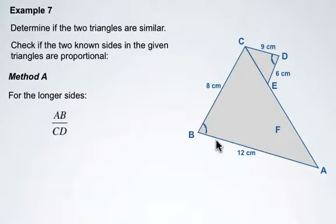So we've got side length AB along here and the corresponding side length over here of 9 in the second triangle. There they are.